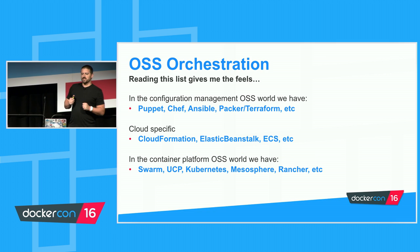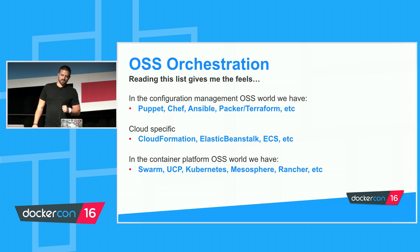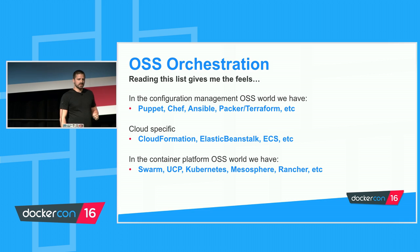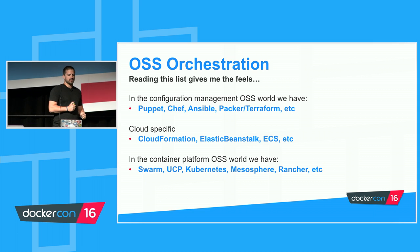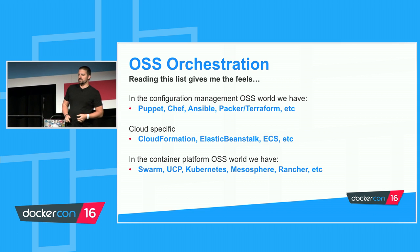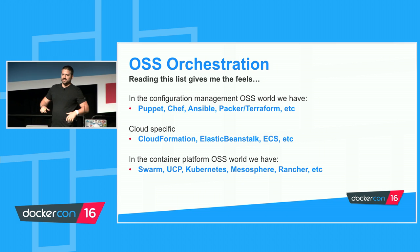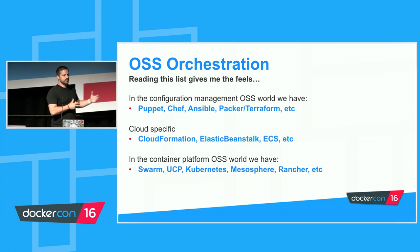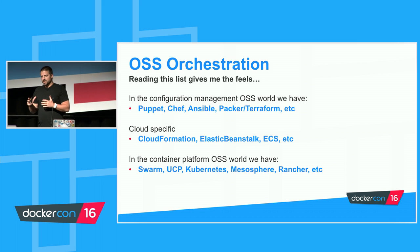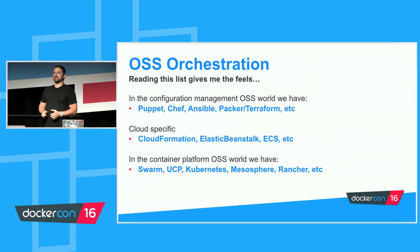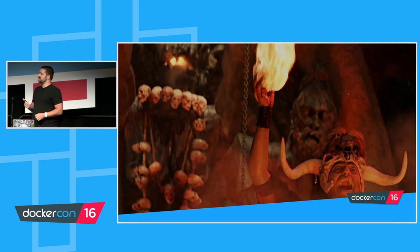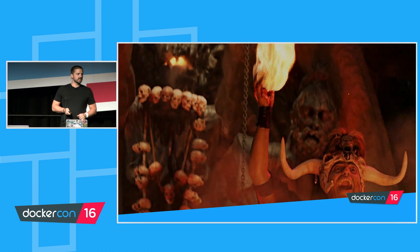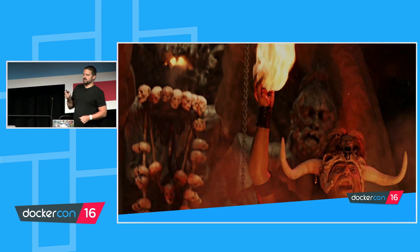Post-2005, we started getting a lot of open source orchestration — configuration management tools, cloud-specific tools. CloudFormation kind of changed the game for a lot of people. Then all of a sudden we started getting a lot of container platform open source stuff. With Swarm, UCP, Kubernetes, Mesosphere, Rancher — all these things kind of exploded with the momentum from the ongoing DevOps revolution. And then Docker kind of threw gasoline onto the fire in 2013. This is actually a picture of me in May 2013 when I installed Graphite in under 30 seconds and had it running — I was an out-of-control maniac at that moment.